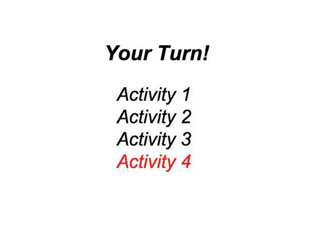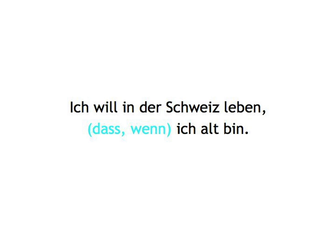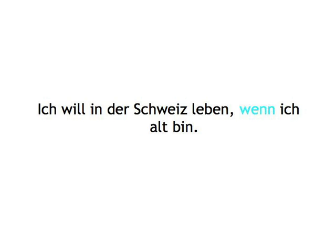So in the example: 'Ich will in der Schweiz leben. Ich alt bin.' — dass, wenn. You would choose 'wenn' and say: 'Ich will in der Schweiz leben, wenn ich alt bin.' The word order in the clause you'll be creating is already correct, so you don't have to change anything there.